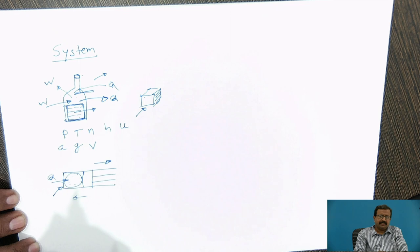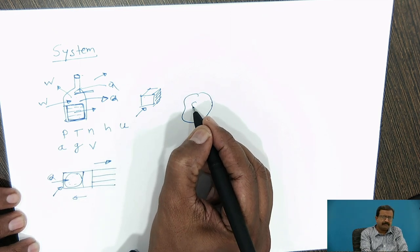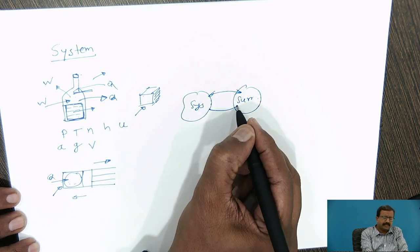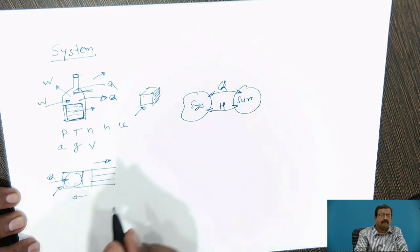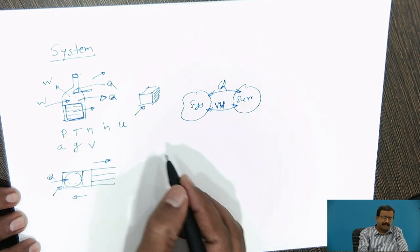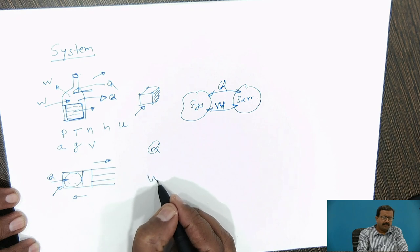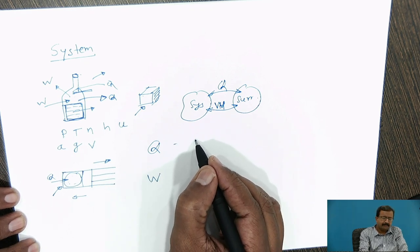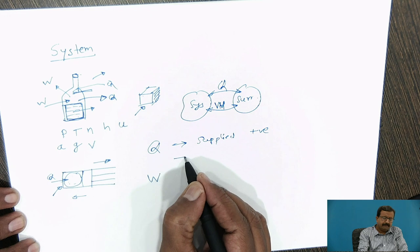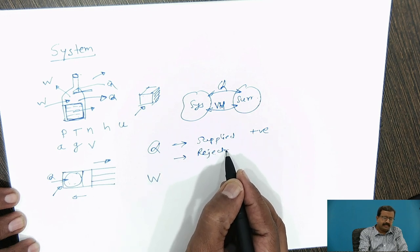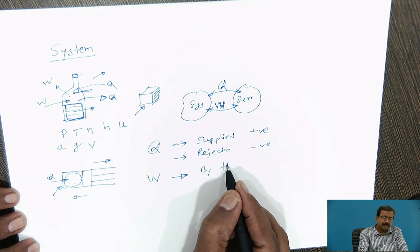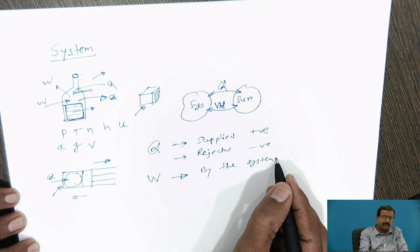The correct thermodynamic representation of a system is, this is my system, and this is the surrounding. Between system and surrounding, there is heat and work interaction. Either Q or work will be transferred. The sign conventions: if Q is supplied to the system, we take it as positive. If it is rejected by the system, we consider it as negative. And very important thing, work done by the system is positive.